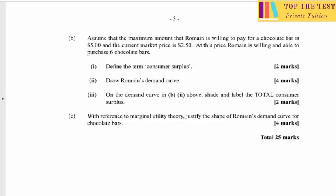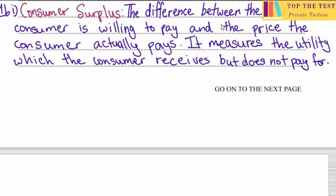For part b, we assume the maximum Romaine is willing to pay is $5 and the current market price is $2.50, at which he is willing and able to purchase 6 chocolate bars. Consumer surplus is the difference between the price the consumer is willing to pay and the price they actually pay — it measures the utility received but not paid for.